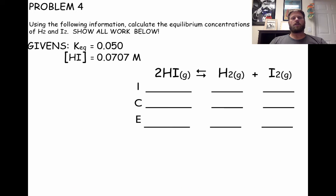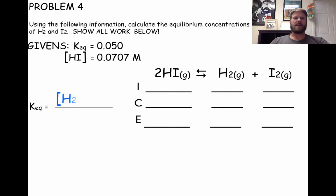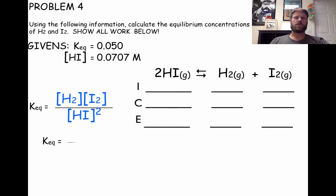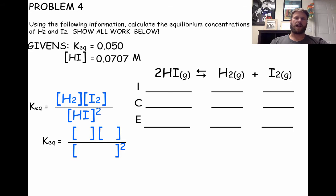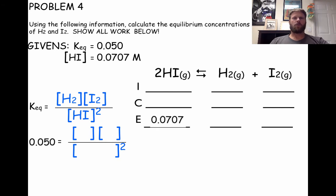In the final problem, we are given an equilibrium constant and the equilibrium concentration of the reactants. We are supposed to find the equilibrium concentrations of H2 and I2. As always, let's start by writing the equilibrium expression — products over reactants. Remember to square HI because of the coefficient in the balanced equation. We know some values to plug in already. K is 0.050, and the equilibrium concentration of our reactant is 0.0707. We'll go ahead and plug that into our ICE table. The initial concentrations of the reactant don't really matter here.